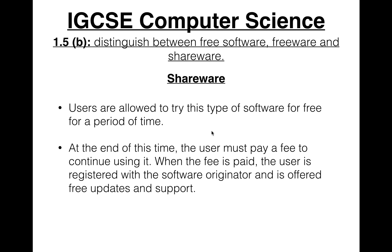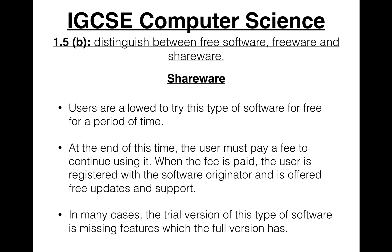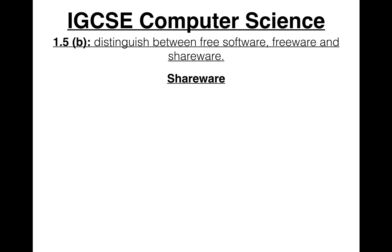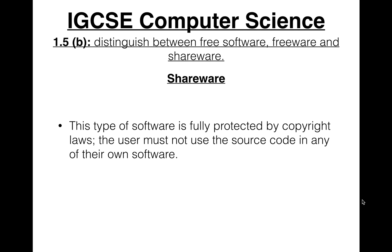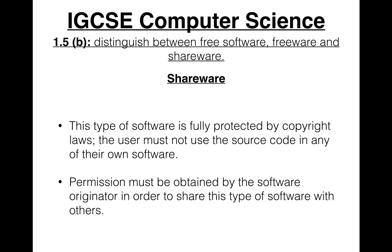When the fee is paid, the user is registered with the software originator and is offered free updates and software support. In many cases, the trial version is missing features which the full version has. It's also important to know that shareware is fully protected by copyright laws, so the user is not allowed to use the source code in any of their own software, and permission must be obtained from the software originator in order to share it with other people.